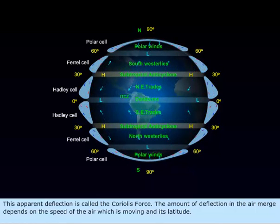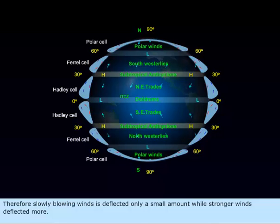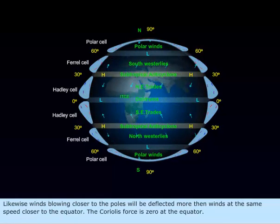The amount of deflection the air makes depends on the speed at which the air is moving and its latitude. Therefore, slowly blowing winds will be deflected only a small amount, while stronger winds will be deflected more. Likewise, winds blowing closer to the poles will be deflected more than winds at the same speed closer to the equator.